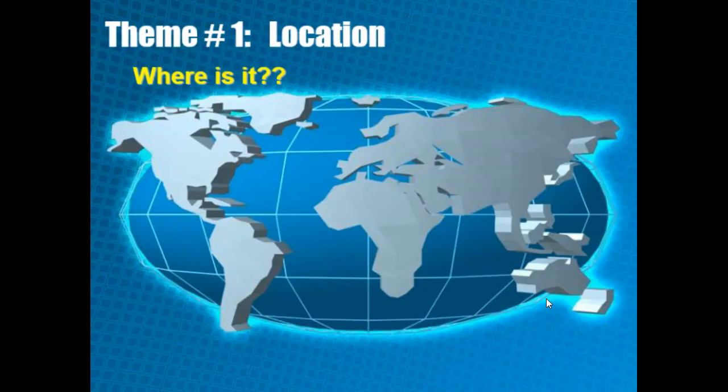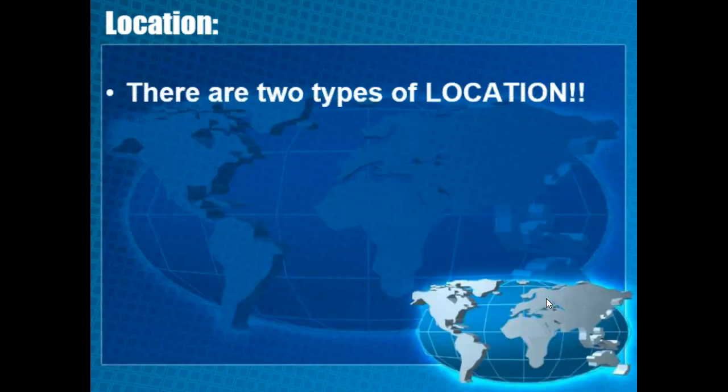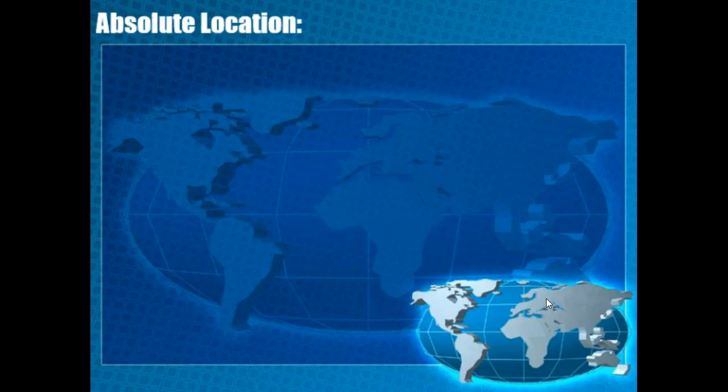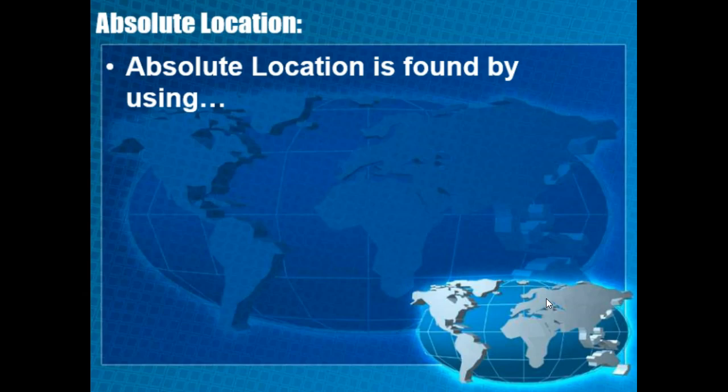So let's start with theme number one: location. The definition for location as the theme of geography is just 'where is it?' — where is this place located? There are two different types of location we're going to discuss. The first is absolute and the second is relative. Absolute location is an exact place on earth.